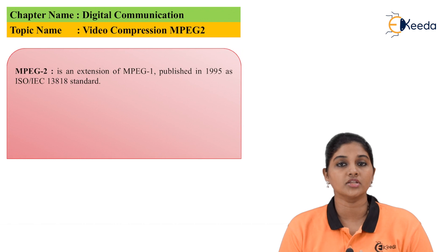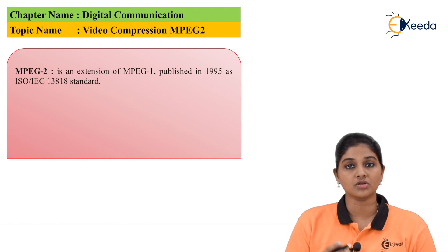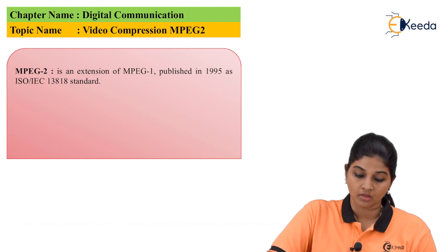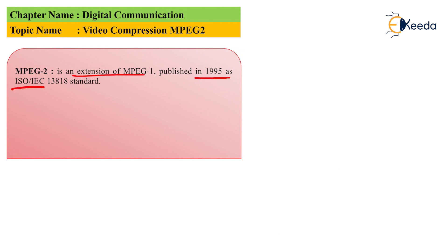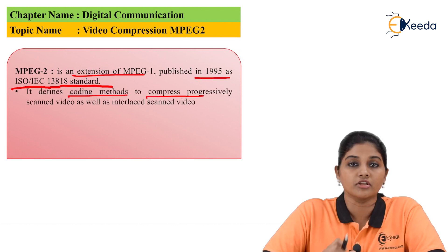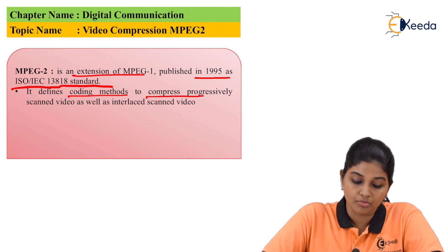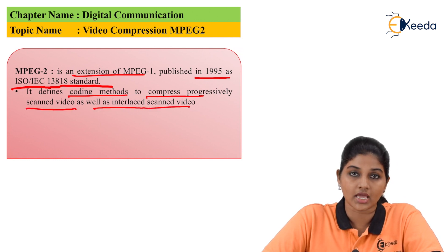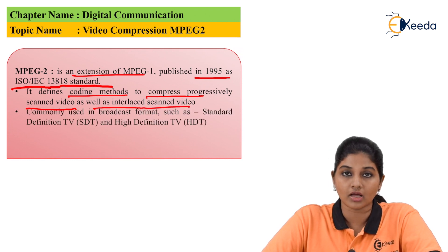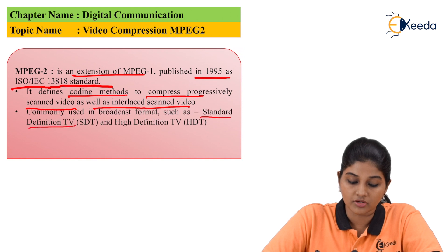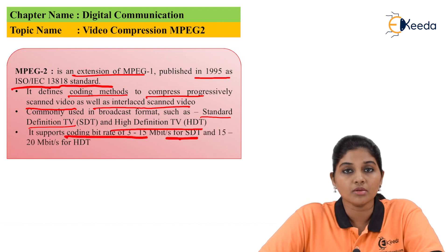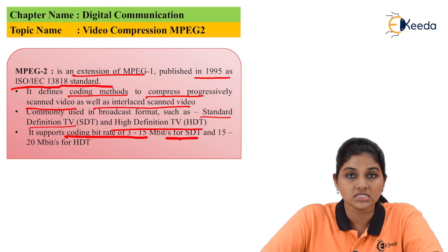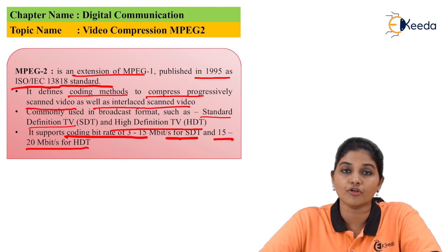MPEG-2 is considered an extension of MPEG-1. It was published in 1995 and is considered an ISO IEC-13818 standard. It defines a coding method to compress progressively scanned video as well as interlaced scanned video. It is used for broadcasting formats, namely standard definition TV (SDTV) and high definition TV (HDTV). It supports coding bit rates of 3 to 15 Mbps for SDTV and 15 to 20 Mbps for HDTV.